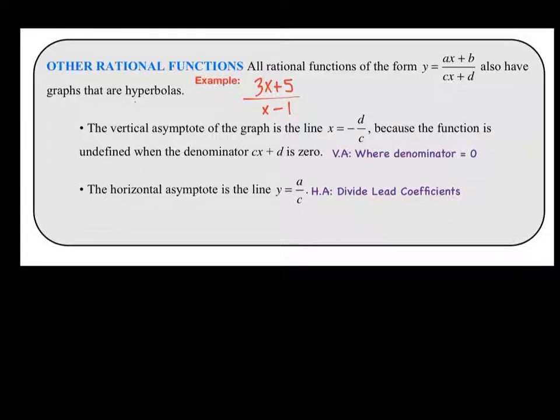Other examples of simple rational functions are when you don't have anything being added or subtracted to your function, but there's an x in the numerator and the denominator. I've given an example here with number values, but it would be ax plus b over cx plus d, where a, b, c, and d are coefficients and x is your variable. So I've used the example 3x plus 5 over x minus 1.